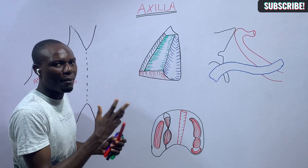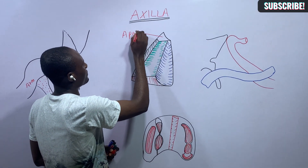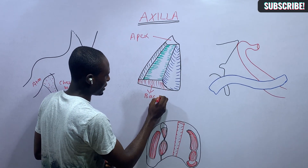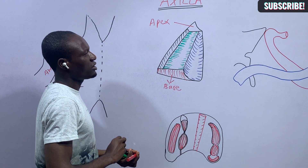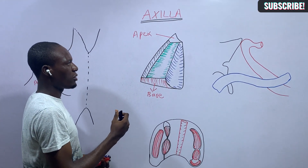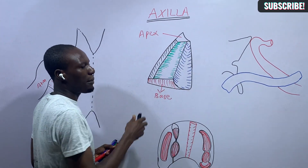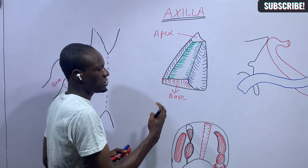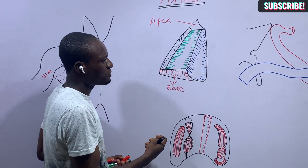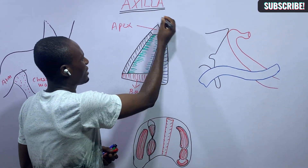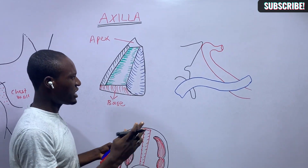Every pyramid must have an apex and a base. This region here is the apex of the axilla, and this region is the base. The apex of the axilla is truncated — it doesn't taper superiorly but rather becomes a bit broad. This apex lies in the region called the cervical axillary canal.